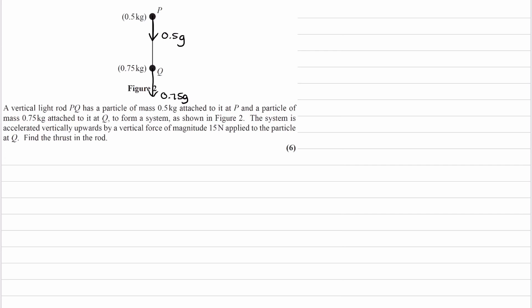We're told the system is accelerated vertically upwards, so both particles will accelerate upwards. I'll call the acceleration A. This occurs because of a vertical force of magnitude 50 Newtons applied to Q. Q will be pushed upwards with a force of 50 Newtons. We're asked to find the thrust in the rod.